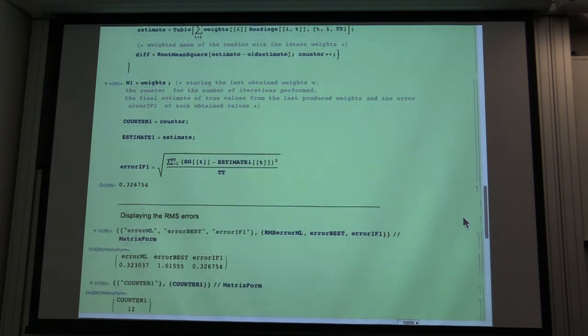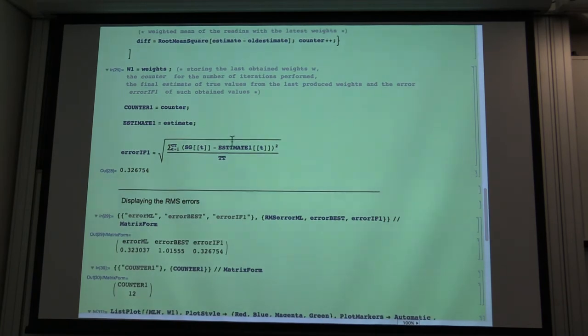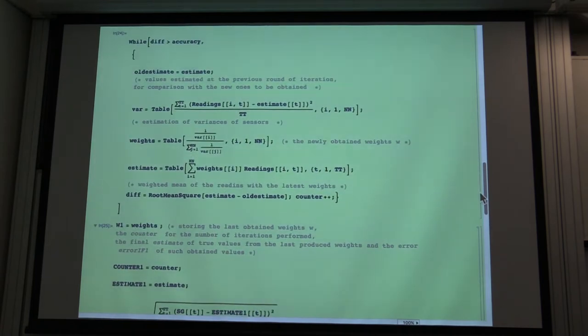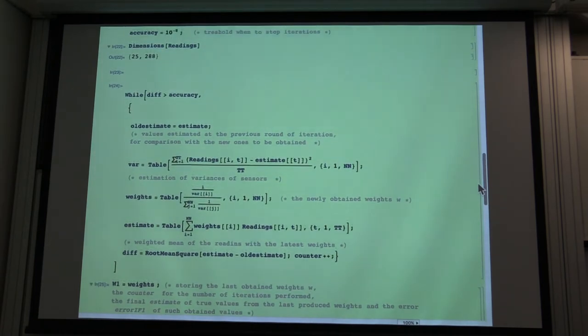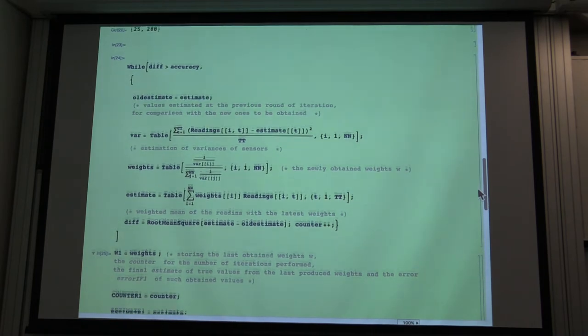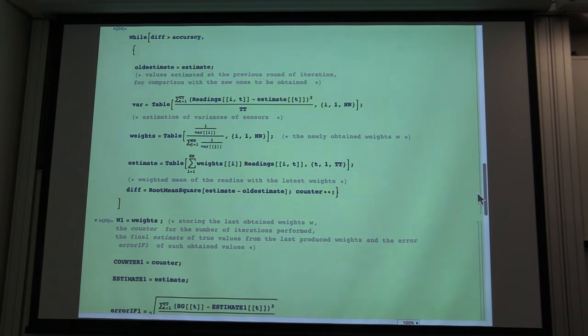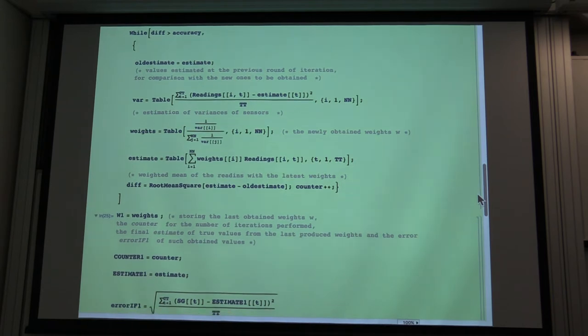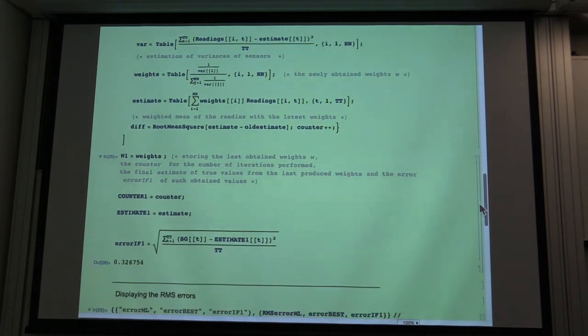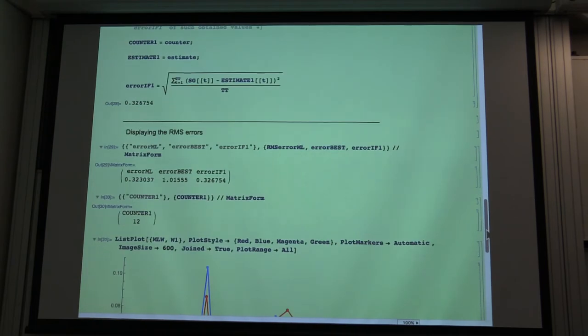We find the variance, the error of such an estimate. And the counter tells you it says 12, which means that the iteration of iteratively computing new variances and then new estimations stopped changing less than 10 to the minus 8 after only 12 rounds of iteration.